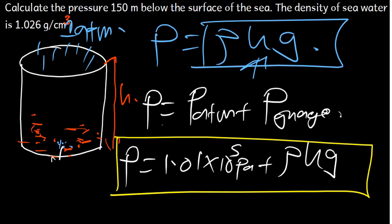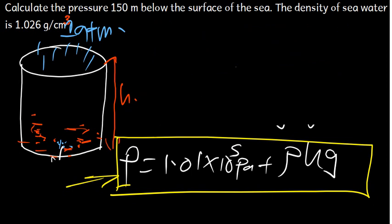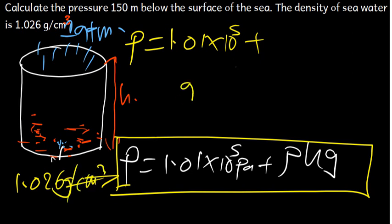We have a question: calculate the pressure 150 meters below the surface of the sea. They are talking about the sea, which cannot be closed — it is definitely open to air. So the formula we need is: pressure equals 1.01 times 10 to the power 5 plus density times H times g. The density given is 1.026 grams per centimeter cubed.